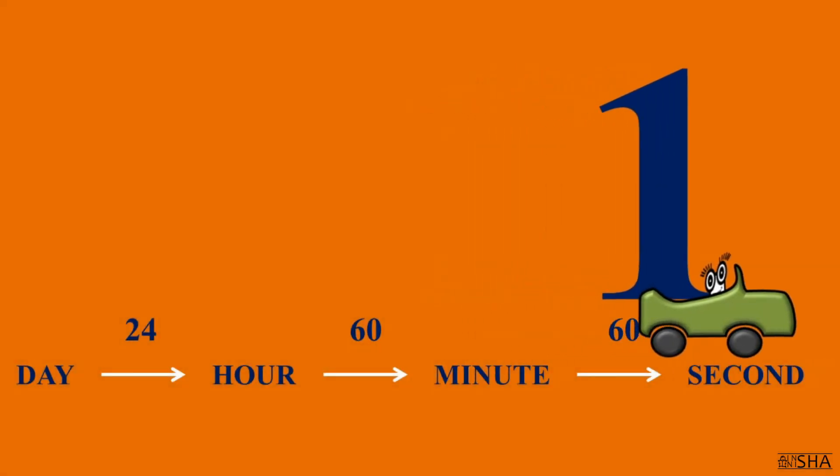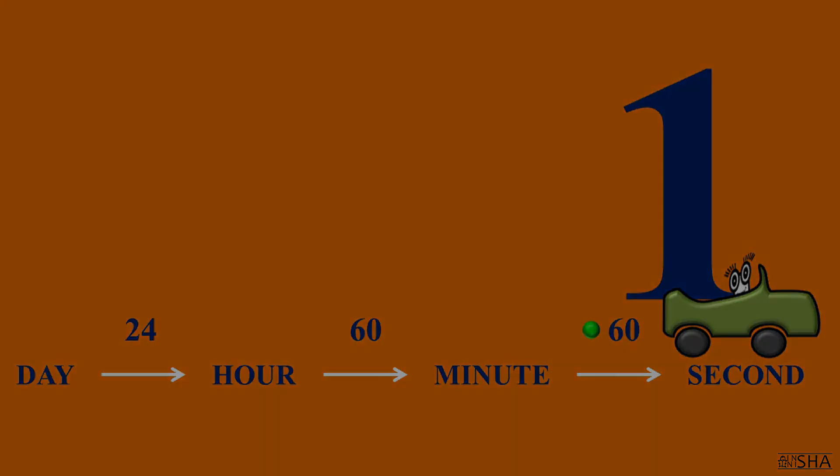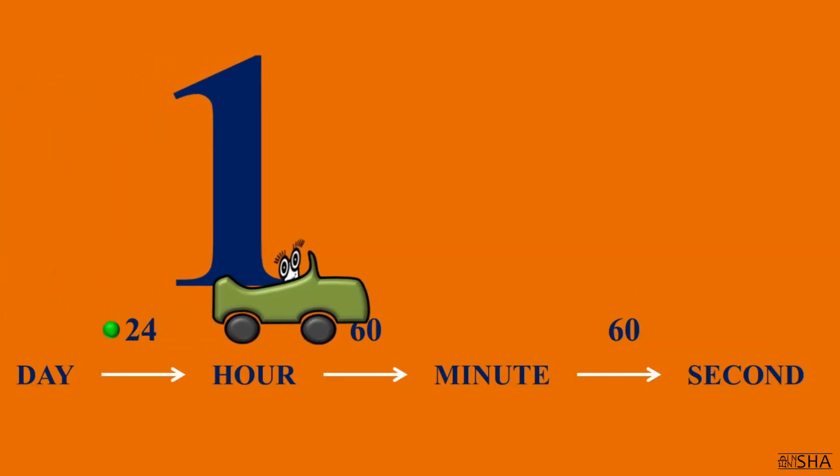Similarly, we convert minutes to seconds. The number of minutes is multiplied by 60. And to convert days into hours, you need to multiply the number of days by 24.